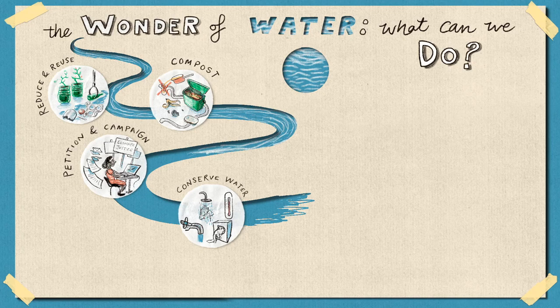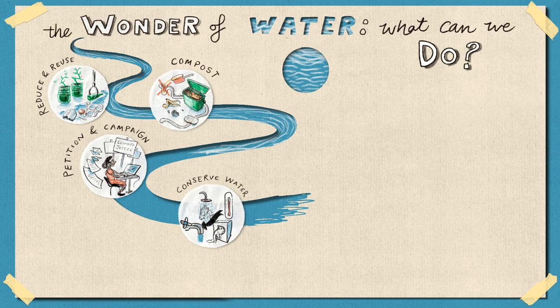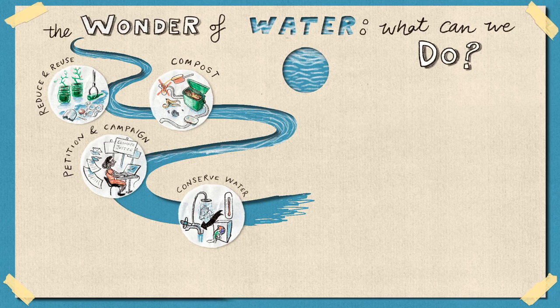We can use cold water rather than hot water when we can. It takes energy to heat up water. So if we use cold water rather than hot water, we are using less energy. We can ask our parents and carers to make sure washing machines and dishwashers are full before using them so that we can use them less and consequently use less water.